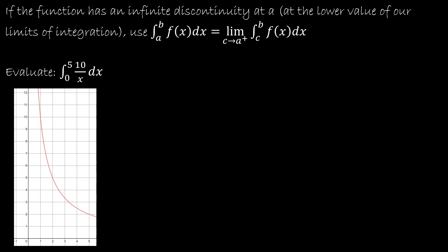For our second example, let's take a look at what happens when we have an asymptote on the left-hand side — at the lower limit. All we're going to do is replace the value that has the discontinuity with some other variable, and take the limit as that variable approaches this value, in this case from the right. We can rewrite this as the limit as B approaches 0 from the right of the integral from B to 5 of 10 over x dx.